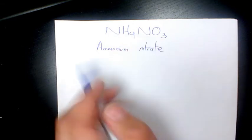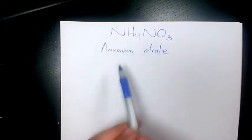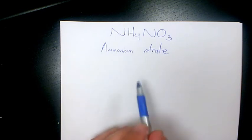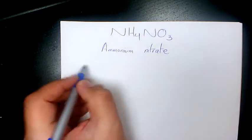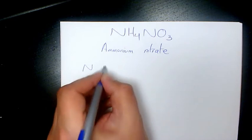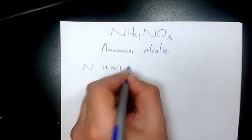So in order to find out the molar mass or molecular weight, I need to find out the atomic mass of all elements here using the periodic table. Nitrogen is 14.007 grams per mole.